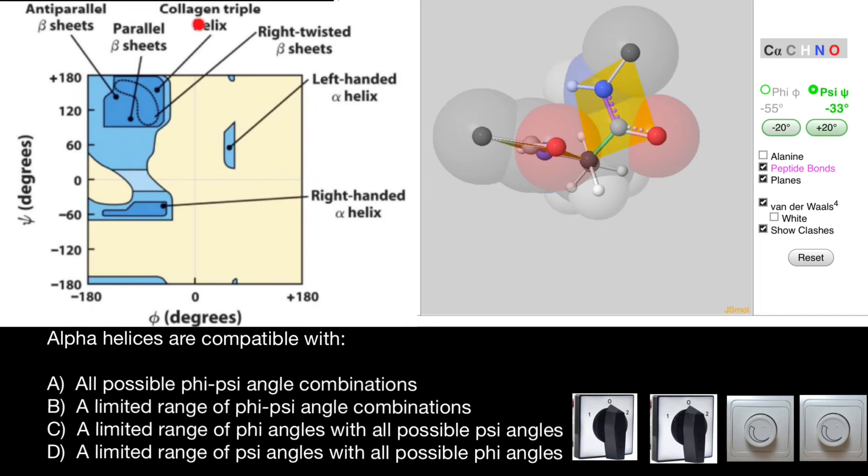Now I want you to pay attention to this Ramachandran plot, which represents all possible angles that phi and psi angles can take. Of course, each plane can rotate 360 degrees for phi and psi angles.